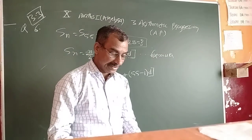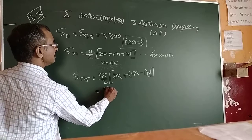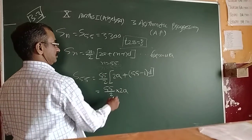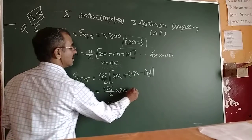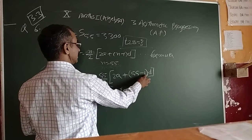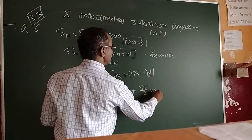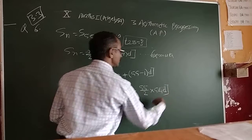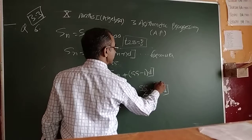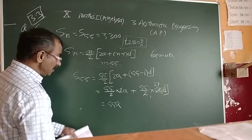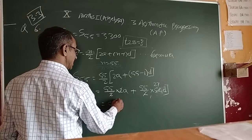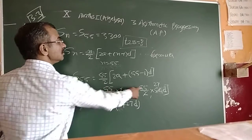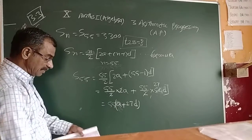By calculating: 55/2 into (2A + 54D). The 2 in 55/2 multiplies with 2A giving 55A, and 55/2 into 54D simplifies — since 54 divided by 2 is 27 — giving 55 into 27D. So we get 55 as a common factor, giving 55(A + 27D).